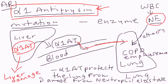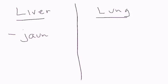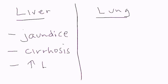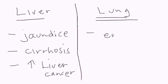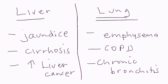Looking more closely at the two organs affected: the mutated alpha-1 antitrypsin molecule stays in the liver rather than exiting, causing liver damage. Liver problems include jaundice, cirrhosis, and an increased risk of liver cancer. In the lung, without alpha-1 antitrypsin protection, neutrophil elastase damages lung tissue, leading to emphysema, COPD, and chronic bronchitis.